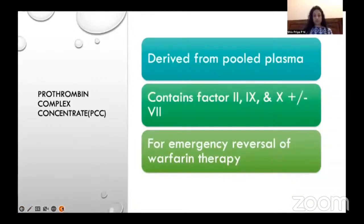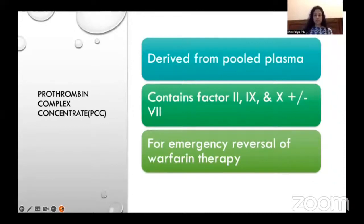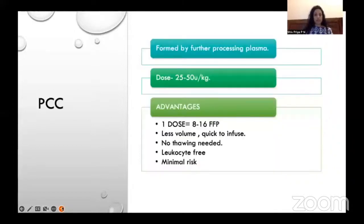Prothrombin complex concentrate is derived from pooled plasma. It contains 3 or 4 factors — mainly factors 2, 9, and 10, and sometimes also factor 7. It is used for emergency reversal of warfarin therapy. It has advantages over FFP: one dose is equivalent to 8 to 16 units of FFP, so with less volume the target can be achieved quickly. No thawing is needed, it is leukocyte-free with minimal risk, and the dose is 25 to 50 units per kg.